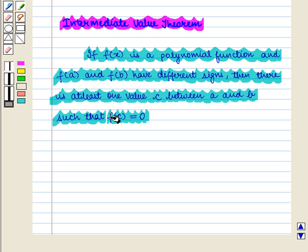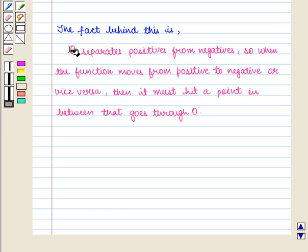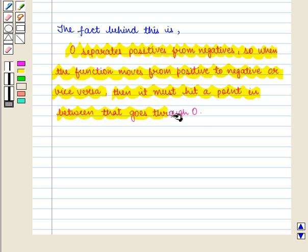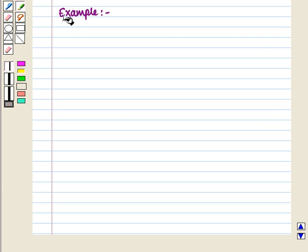The fact behind this is 0 separates positives from negatives, so when the function moves from positive to negative or vice versa, it must hit a point in between that goes through 0.